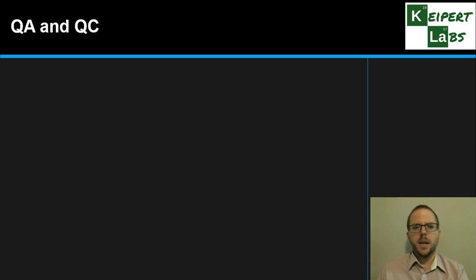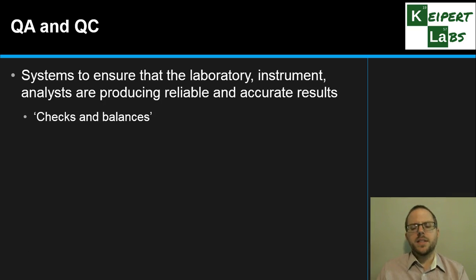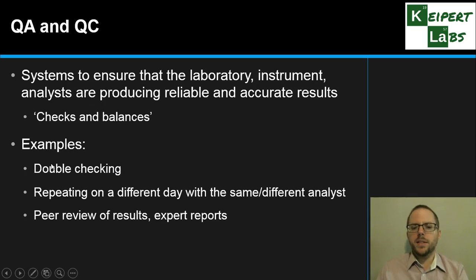And speaking of double checking, we get to our last main point talking about quality assurance and quality control. Probably the shorthand way you could understand that - quality assurance is what you do before you do the testing. Quality control is what you do to check after and during the testing. So QA is setting things up and QC is your monitoring basically. So it's the systems that we put in place to ensure that the lab, the instrument and the analysts are producing reliable and accurate results. Colloquially we might say they're the checks and balances. The things that we would do to make sure that things are working the way that they should, whether that's at the big picture, the level of the lab itself and its own systems, the instrument we're using and the people that are using it.